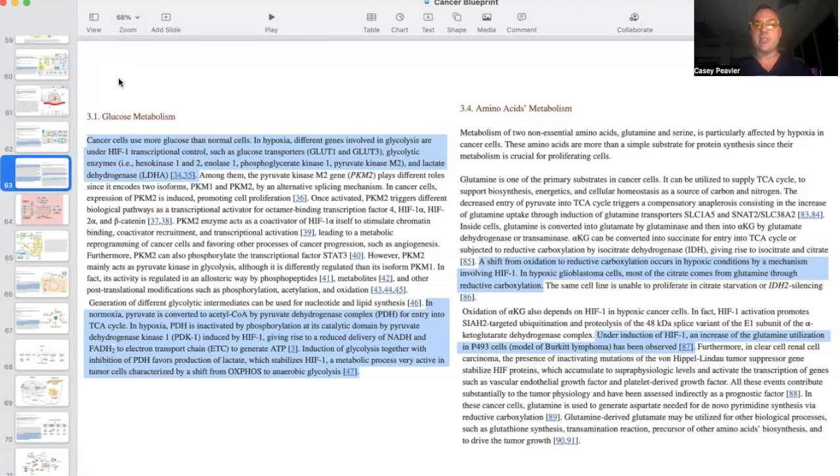Induction of glycolysis together with inhibition of PDH favors production of lactate, which stabilizes HIF further. Lactate is the byproduct of aerobic glycolysis or anaerobic glycolysis. Lactate actually stabilizes HIF-1. However, HIF-1 is further generating more of the Warburg effect, so it ends up being a vicious cycle, a metabolic process very active in tumor cells characterized by a shift from oxidative phosphorylation to anaerobic glycolysis, the Warburg effect.